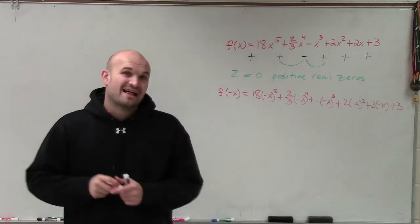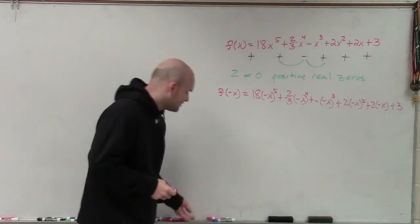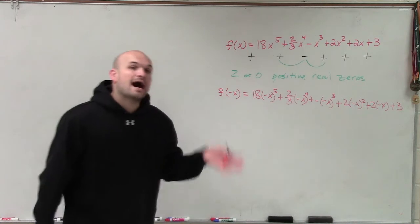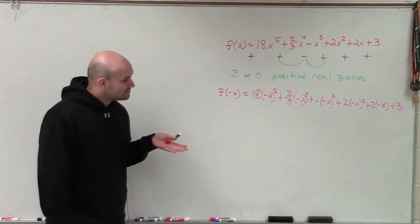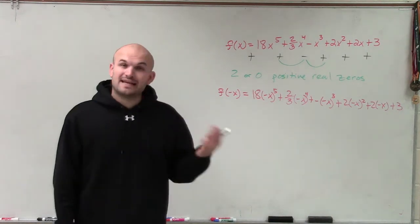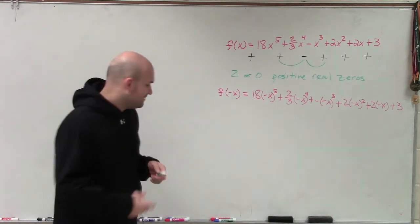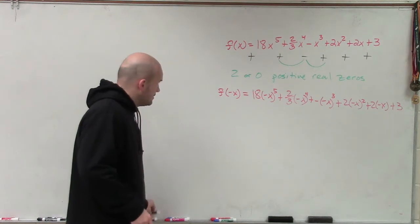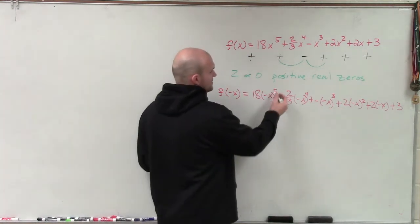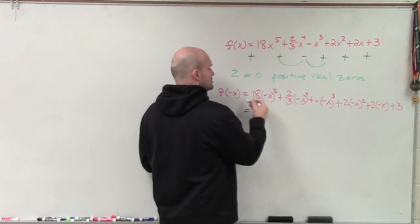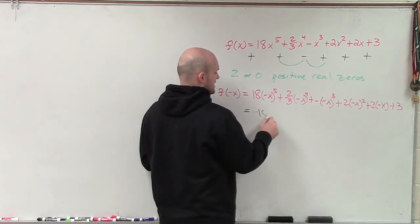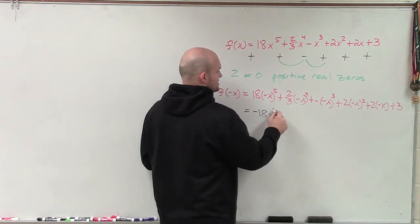So now what we need to do is evaluate for our negative x. Just remember, whenever we have a negative value raised to an odd power, that remains negative. And if we have a negative number raised to an even power, it becomes positive. So this now turns into a negative, because I'm multiplying negative x to an odd power. So now this whole term will be negative 18x to the fifth.